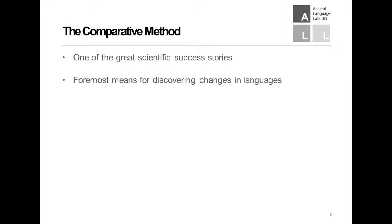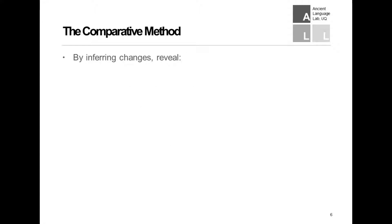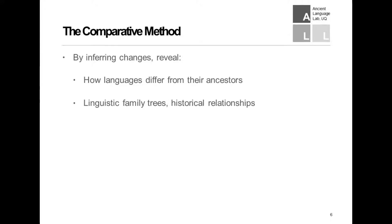It has been and still is our foremost means for discovering changes in the history of languages. It enables linguists to discover and make sense of things like sound changes like Grimm's law, morphological changes as when English past tense 'digged' became 'dug' or 'clomb' became 'climbed,' and by inferring changes like these, historical linguists reveal how languages differ from their ancestors, allowing us to piece them together into linguistic family trees or networks of historical relationships.